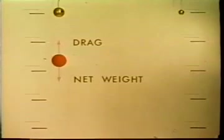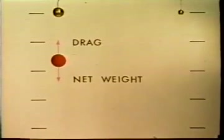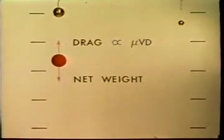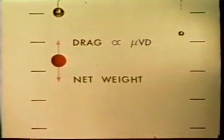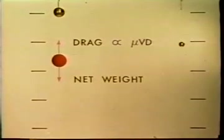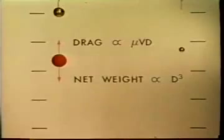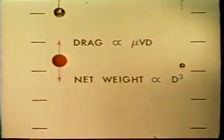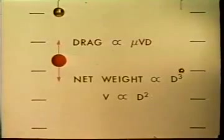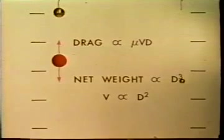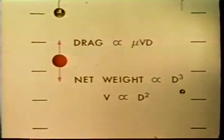The drag of a falling sphere is proportional to its diameter and to its speed. The net weight of the sphere is proportional to the cube of its diameter. The velocity is therefore proportional to d squared. They have diameters in the ratio of two to one, so the larger one falls in syrup four times as fast as the smaller.